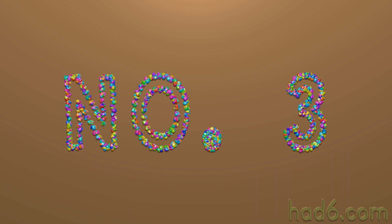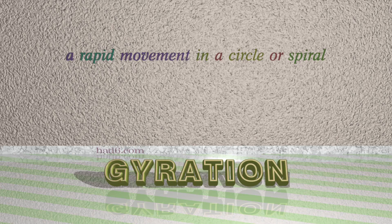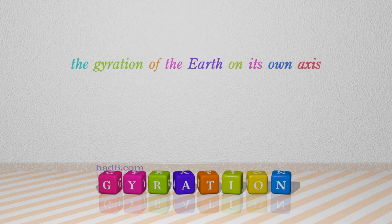Number 3: Gyration. Which means a rapid movement in a circle or spiral. For example: The gyration of the Earth on its own axis.